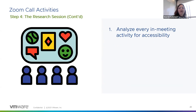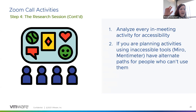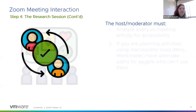On the Zoom call, you have to analyze every in-meeting activity for accessibility. If you're going to use Miro or Mentimeter, you need an alternate path. I can't use Miro, so every time I go on a call at VMware that includes Miro, I pair up with somebody and private message them, and they take my Miro input and turn it into what goes on the board for me. It doesn't mean don't use these things ever — it means use them with some thought so that you've got alternatives set up for people instead of them having to raise their hand mid-call to say they can't use Miro. We don't like having ourselves singled out because of our disabilities.